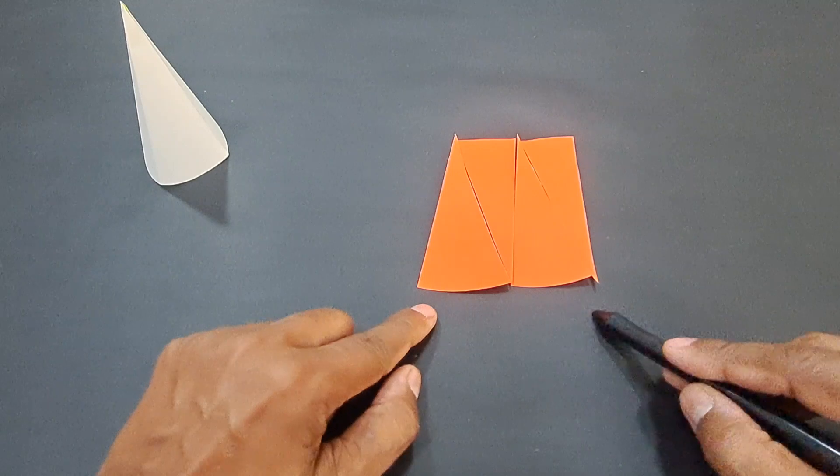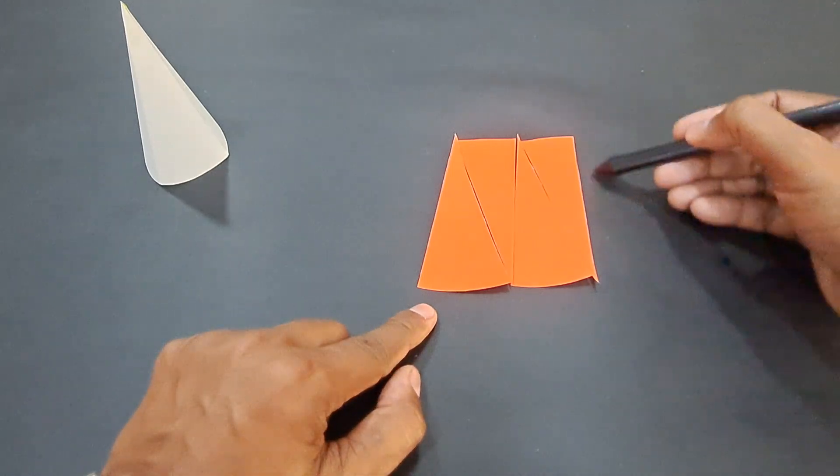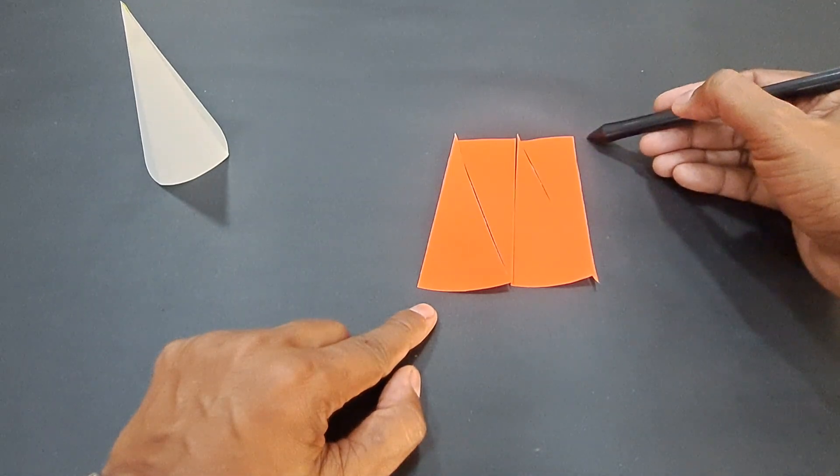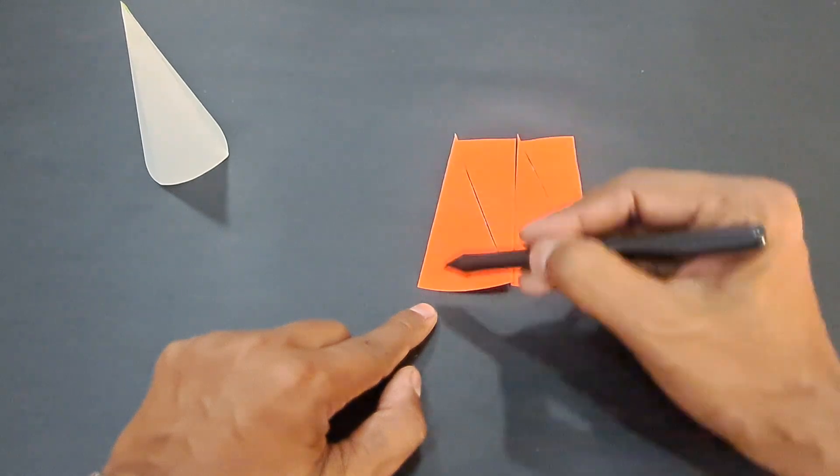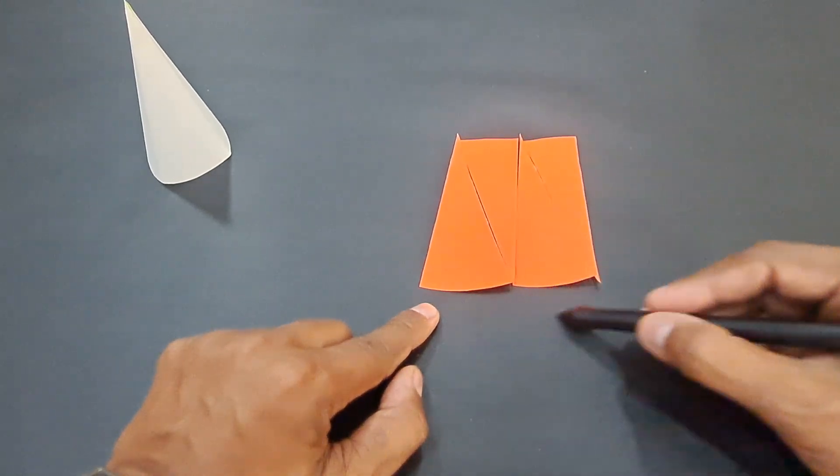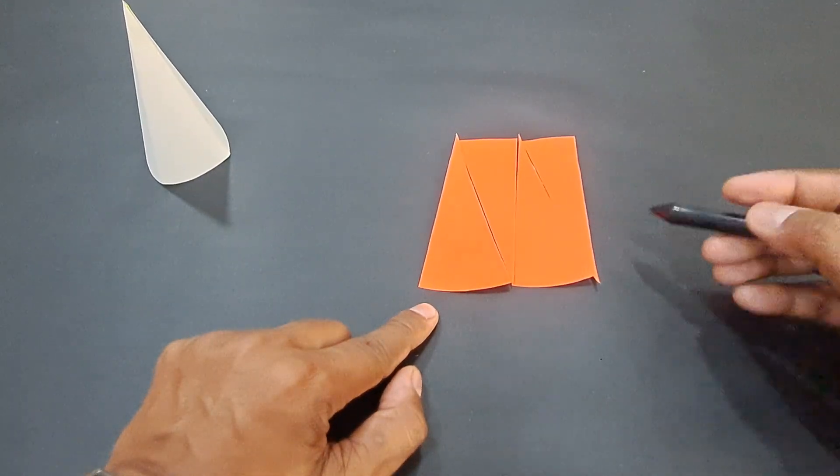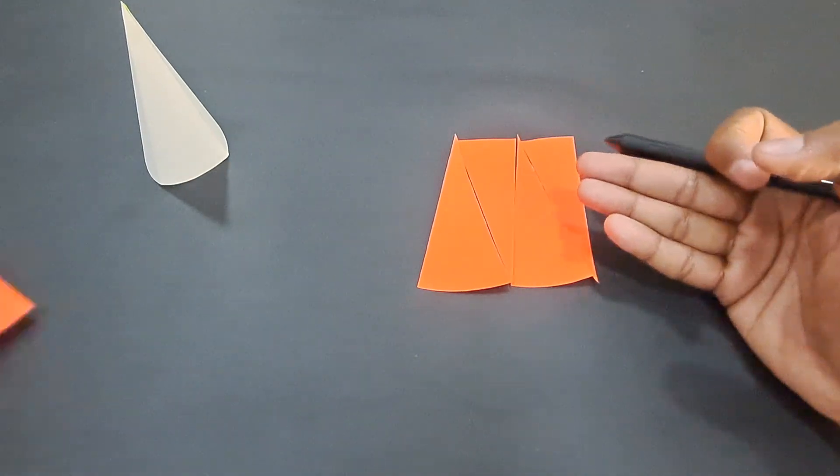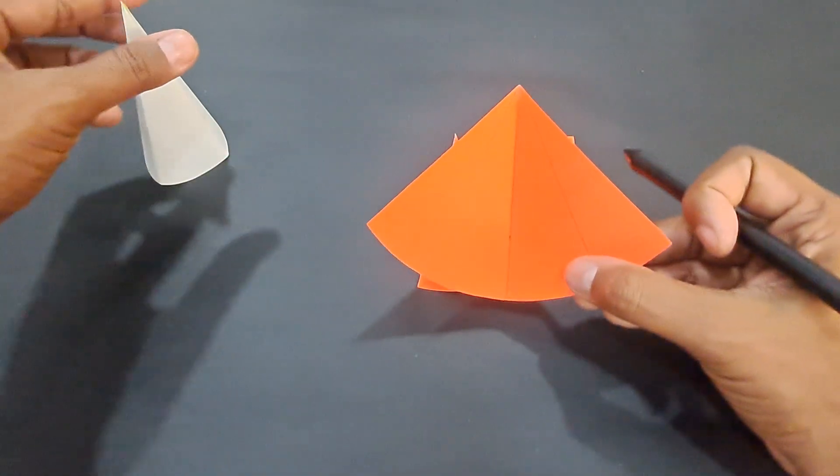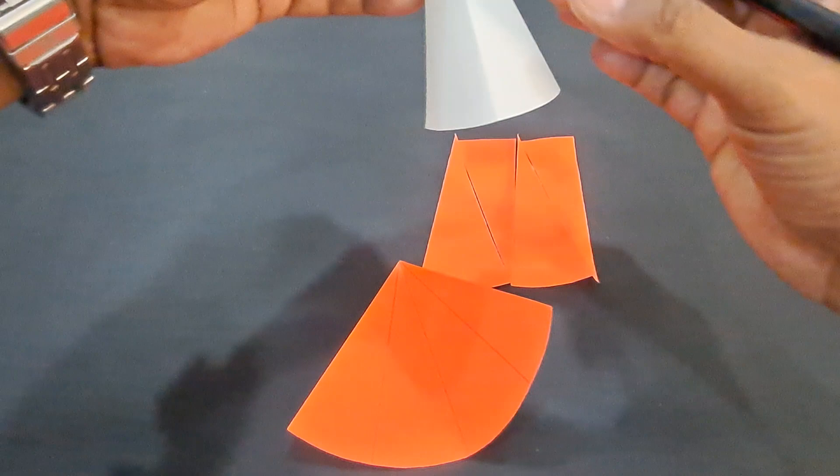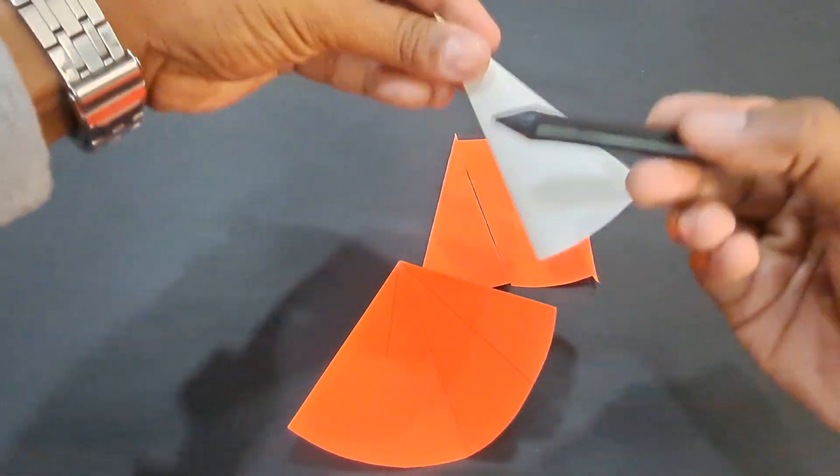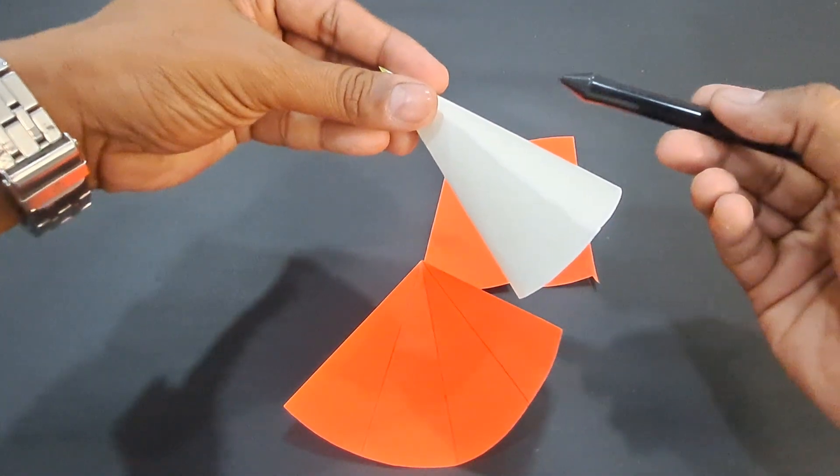then πr is this length and this radius gets converted to slant height L. Therefore, the area of this is πr times L, which is πrL, and the same area got converted into the curved surface area of a cone. And therefore,